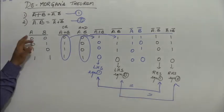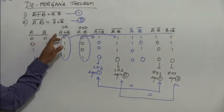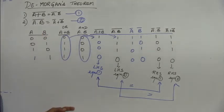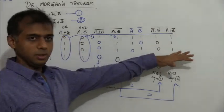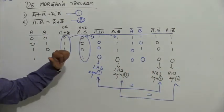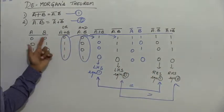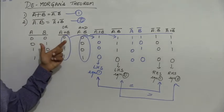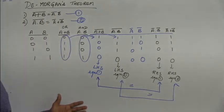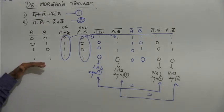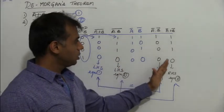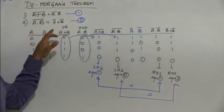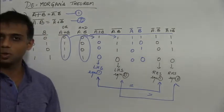For three variables A, B, and C, you would have eight combinations from 0,0,0 to 1,1,1. For four variables A, B, C, D, you would have sixteen combinations from 0,0,0,0 to 1,1,1,1. By writing the truth table for the individual components, we can finally prove the first and second statements of De Morgan's theorem.